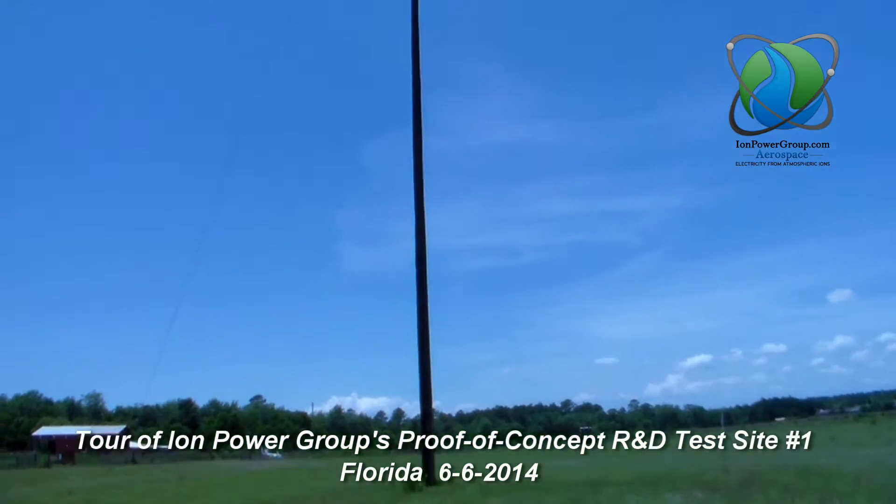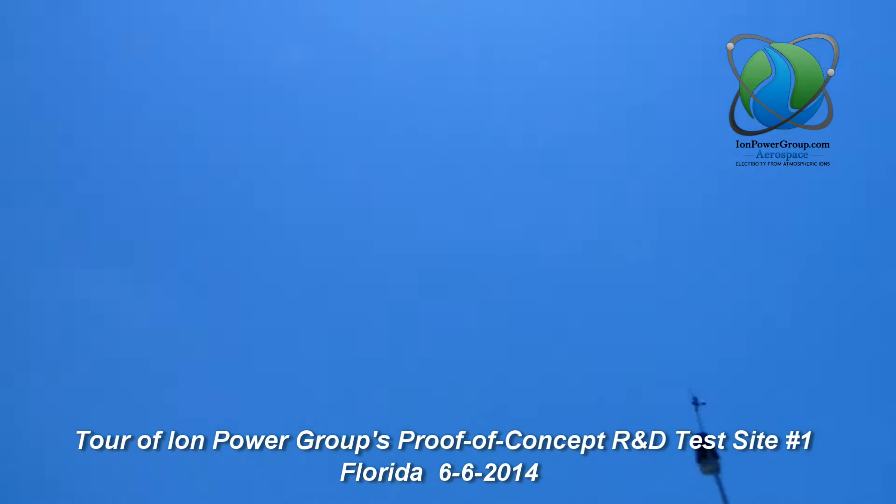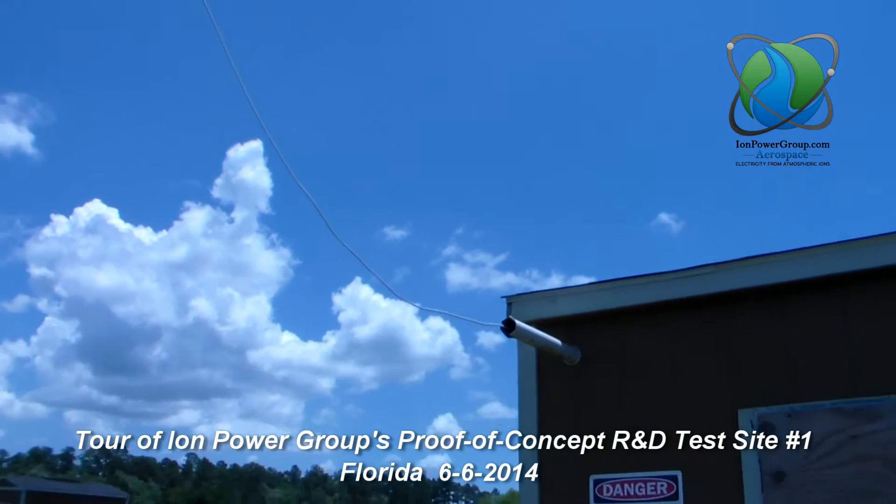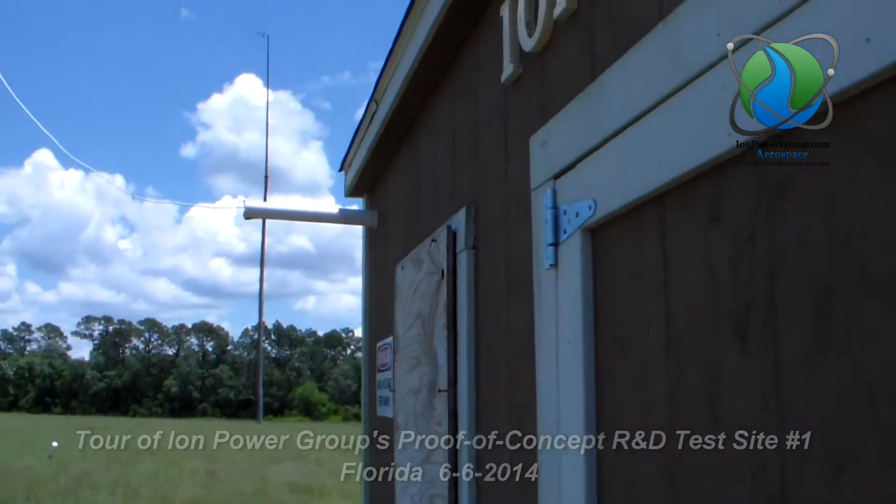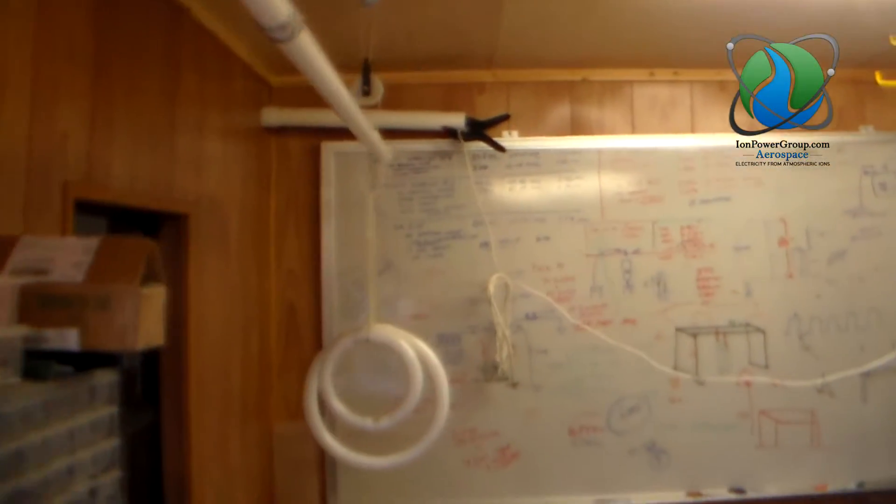And then this is the drop line coming down from the ion collectors and going into the research shack. It goes through that PVC pipe and into the building here.